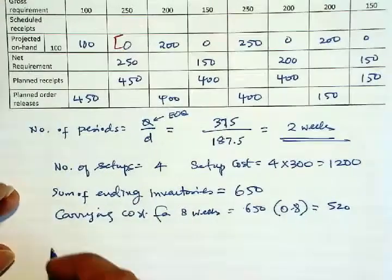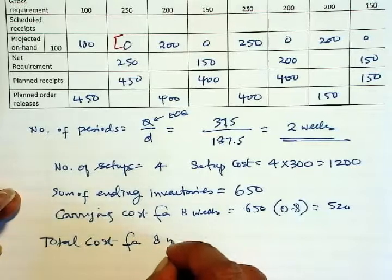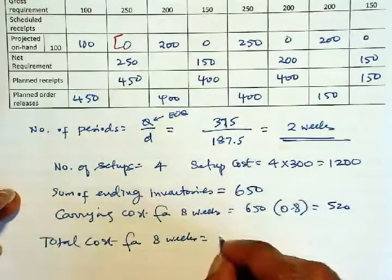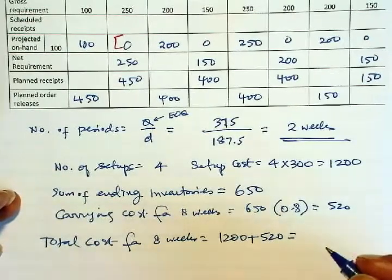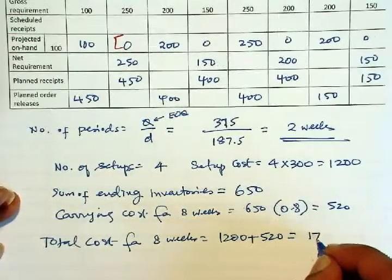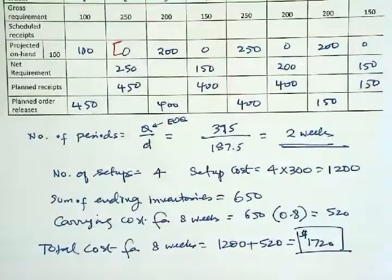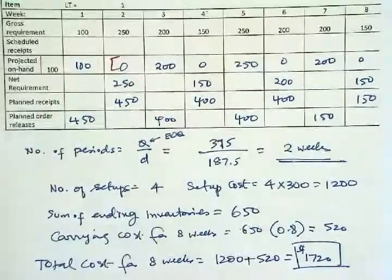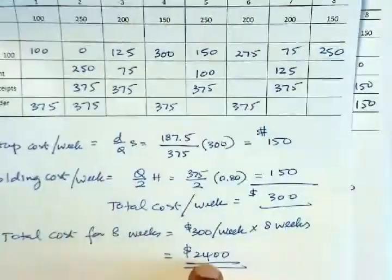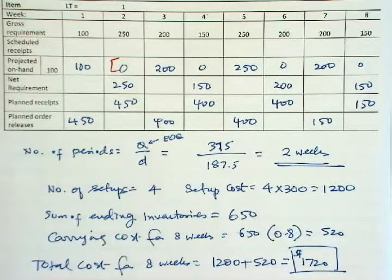So total cost for 8 weeks is 1200 plus 520, which will give you 1,720. And that is the least cost lot sizing method. So lot for lot was 2,100, the EOQ is 2,400, and POQ is 1,720.